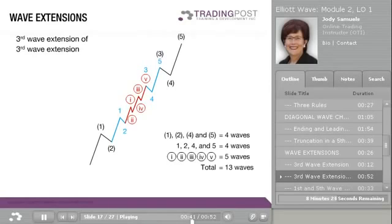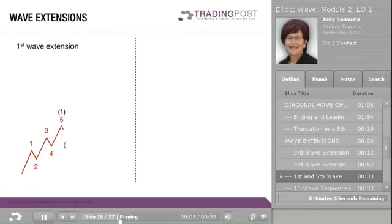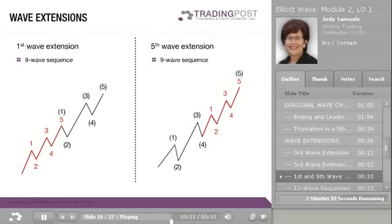Now the next question is: if Wave 3 is extended, what does that tell you about the length of Wave 5? I can hear you saying that it won't be extended, and that is the correct answer. Now let's look at Wave 1 and Wave 5 extensions. Waves 1 and 5 extensions also occur in the form of 9-wave and 13-wave sequences. If Wave 1 is extended, it is likely that Waves 3 and 5 will not be extended. And if Wave 5 is extended, it is likely that Waves 1 and 3 were not extended.